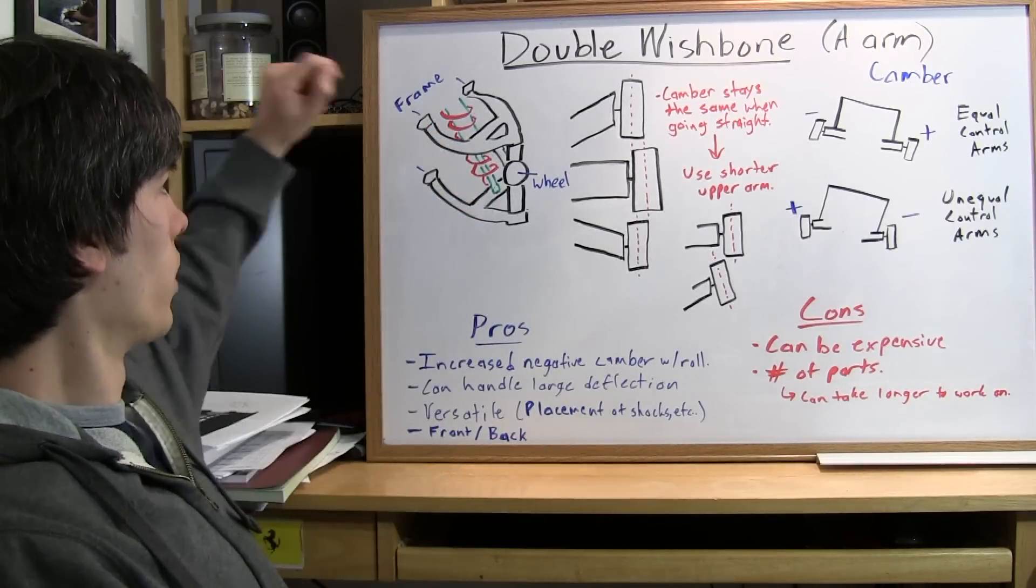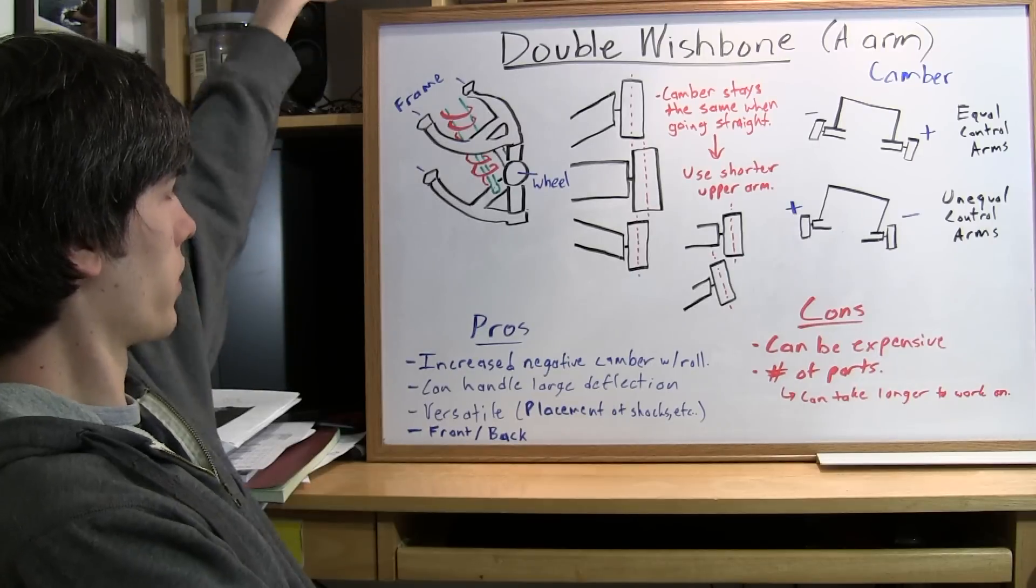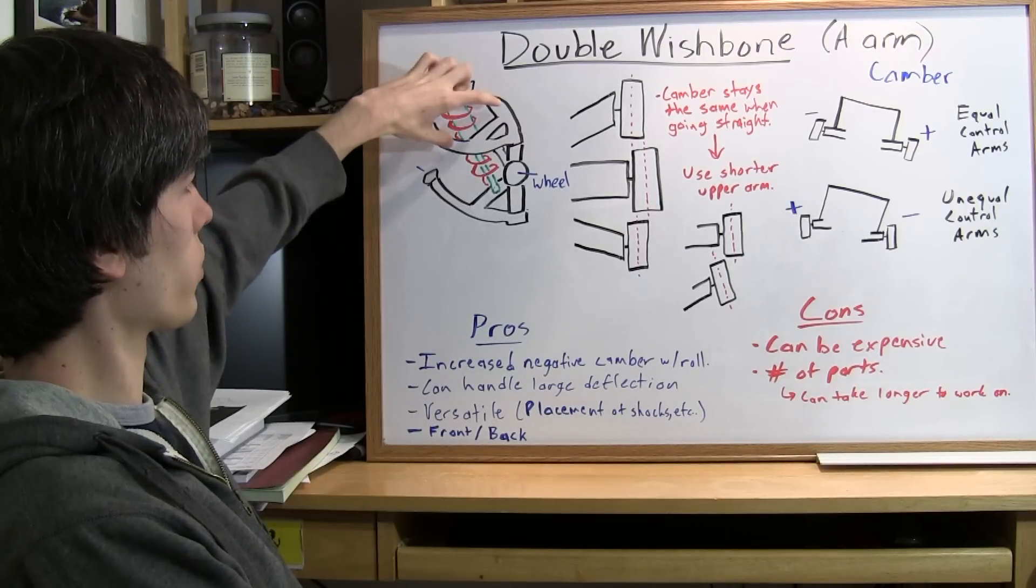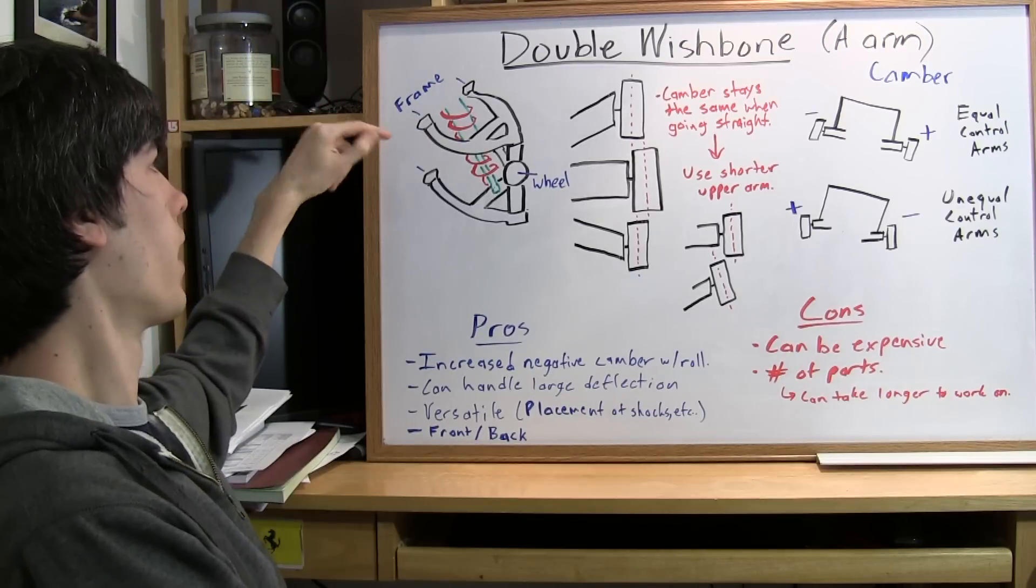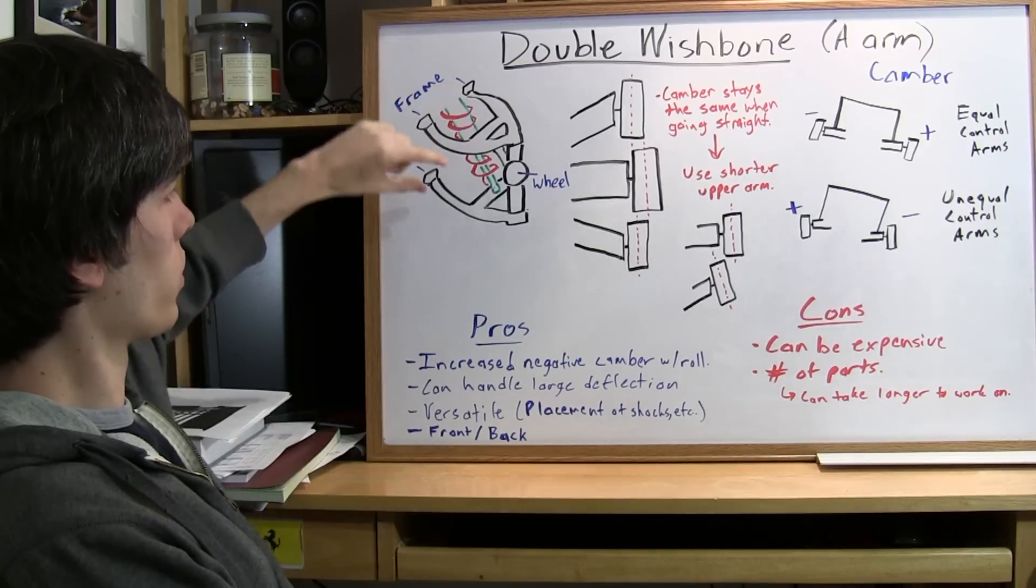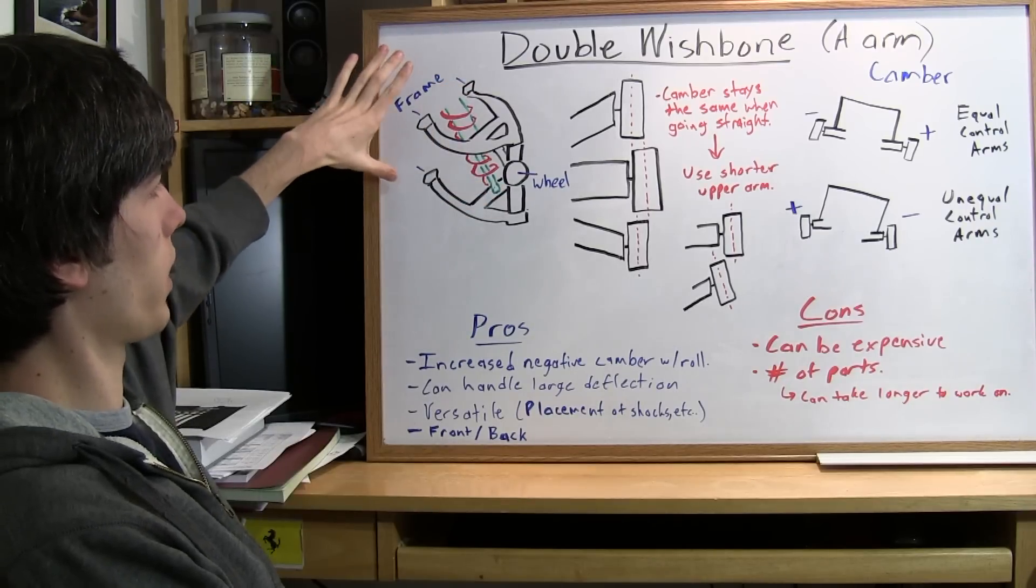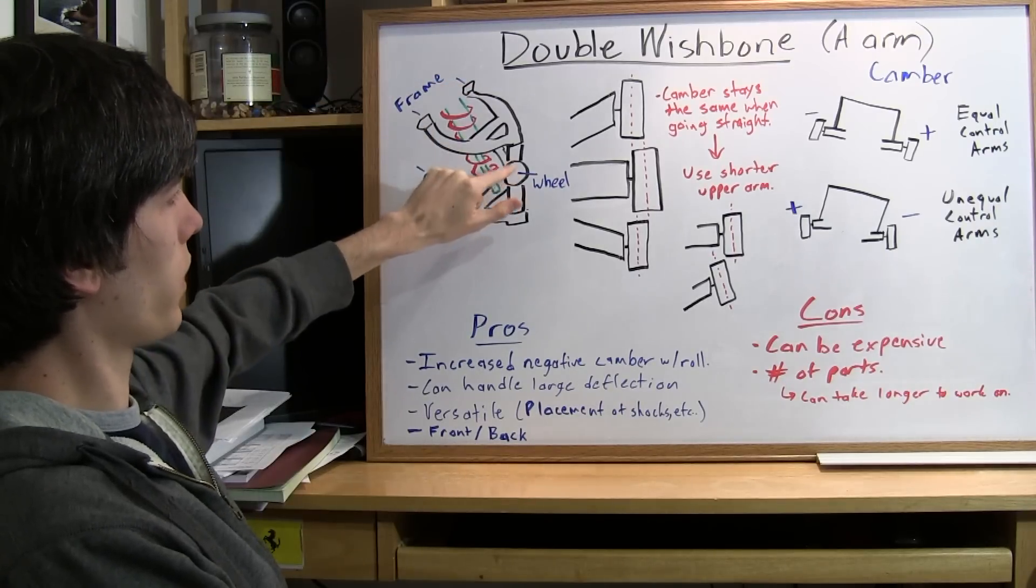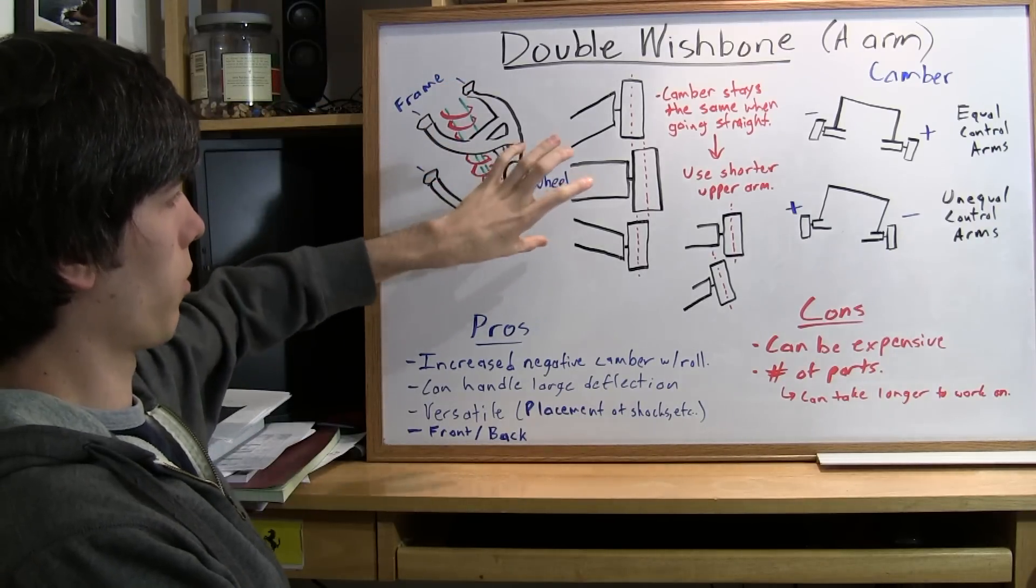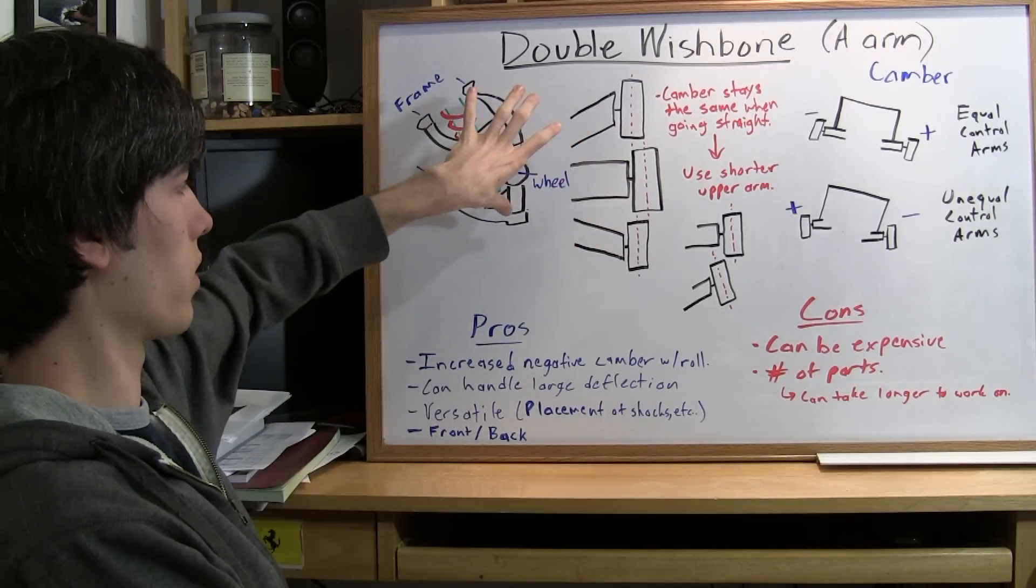Alright anyways, so basically what a double wishbone suspension is is you've got two control arms and they're in the shape of a wishbone, hence the name, and so these two control arms will be connected to a frame, the frame of your car, and then the front of it here is where your brake will mount on and then your wheel on top of that.